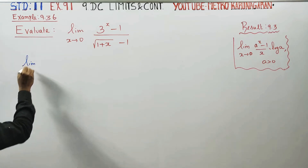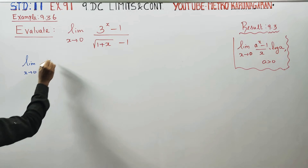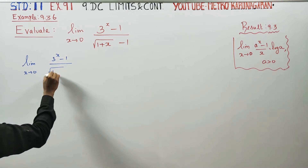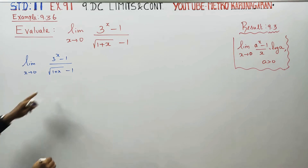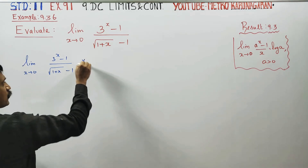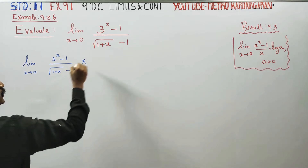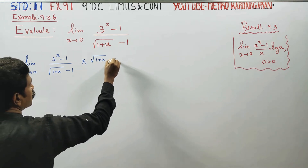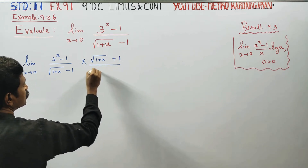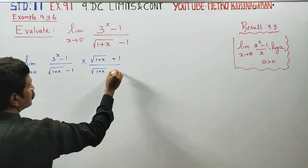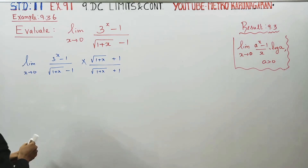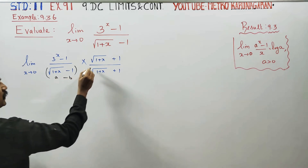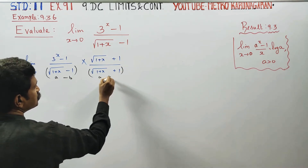Limit x turns to 0, the expression is (3^x - 1) divided by (√(1+x) - 1). I am going to rationalize the denominator — I am going to multiply the numerator and denominator by its conjugate, in order to make the denominator into the form (a - b)(a + b).